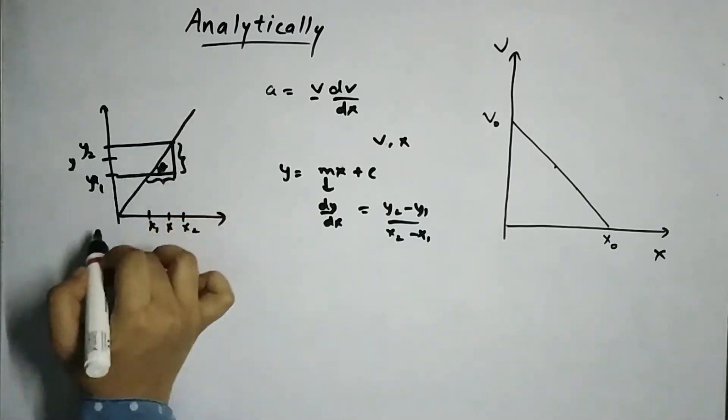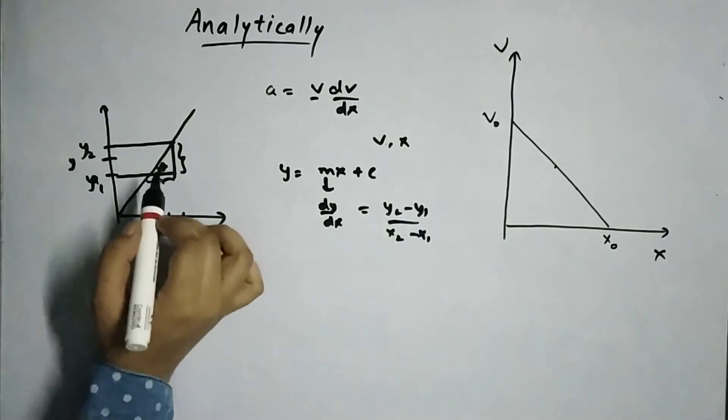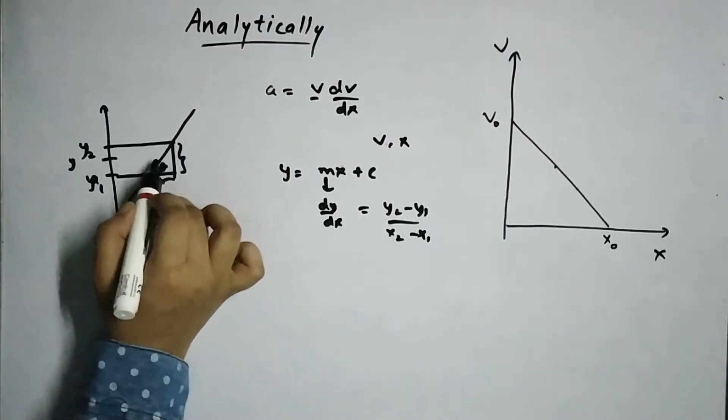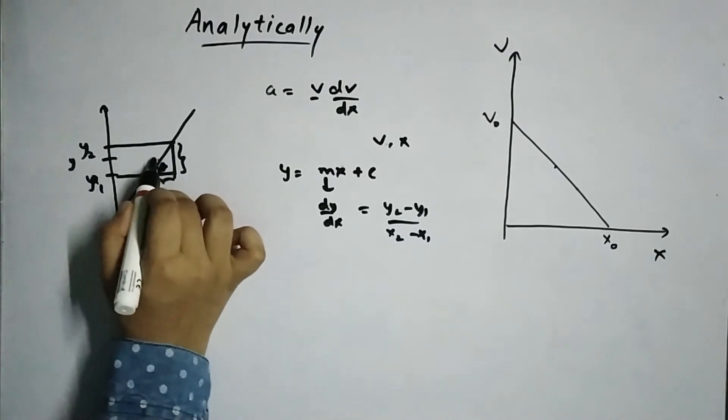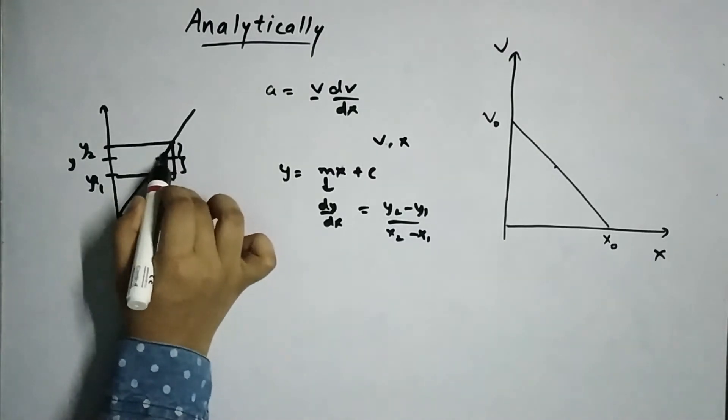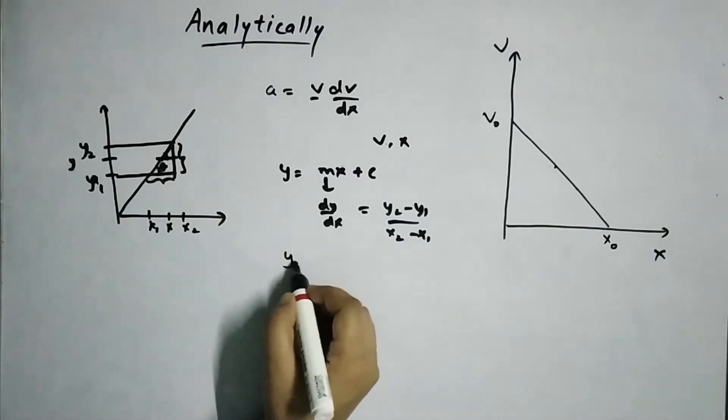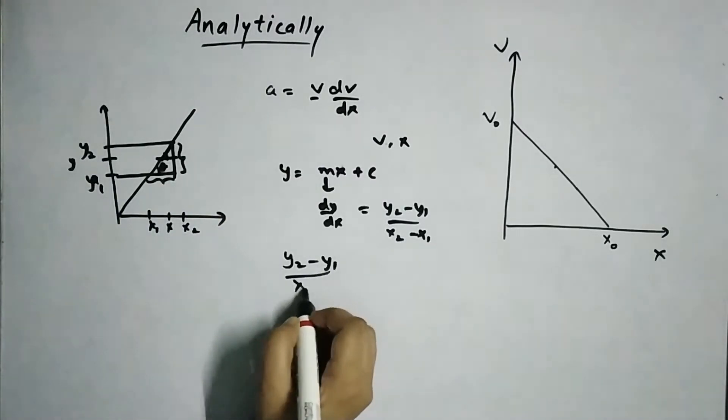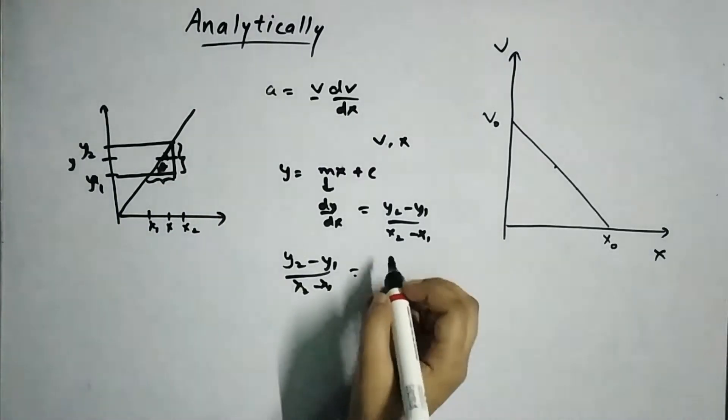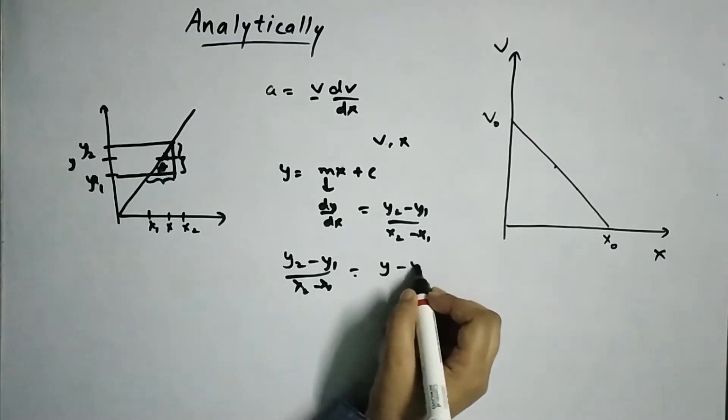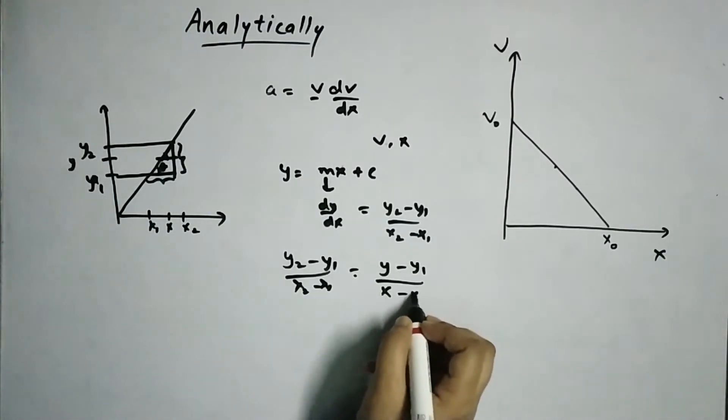Now, since it's a straight line, so the slope will be equal at any time, right? The slope here will be equal to the slope here. So what I will do is y2 minus y1 upon x2 minus x1 will be equal to y minus y1 upon x minus x1.